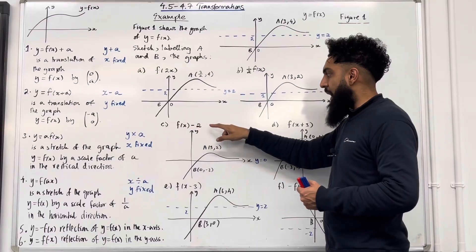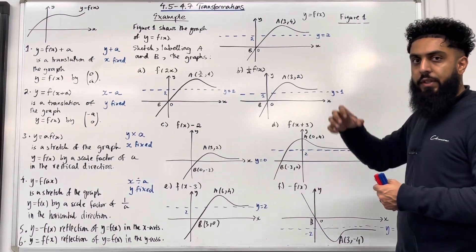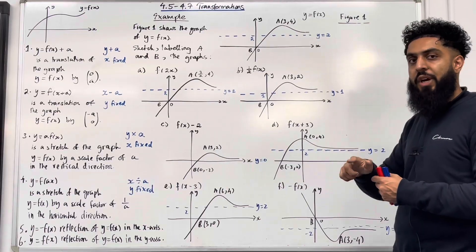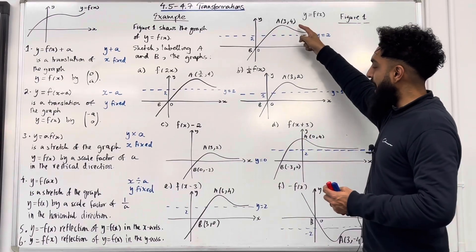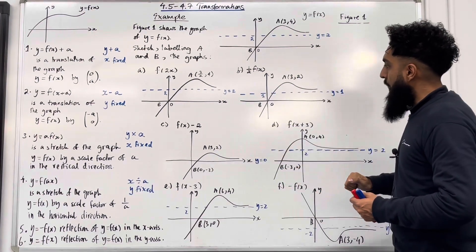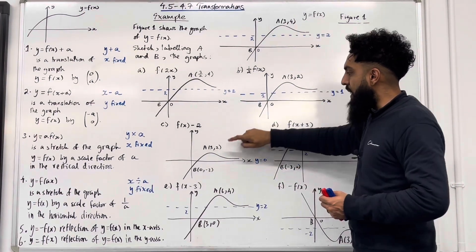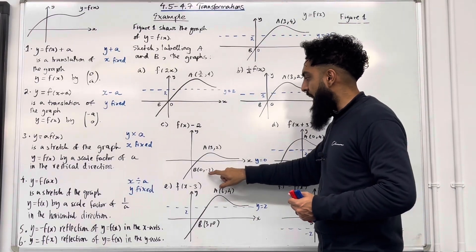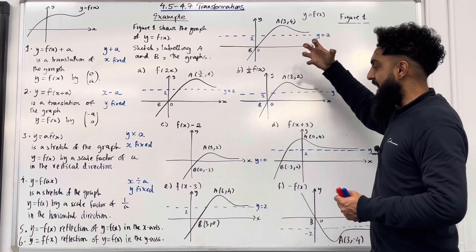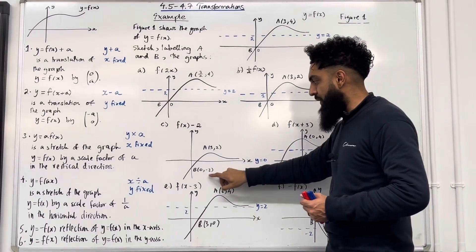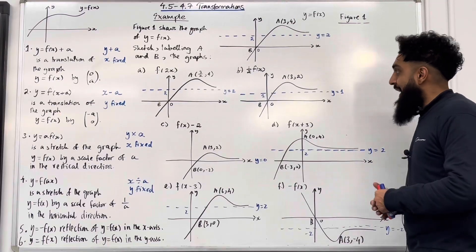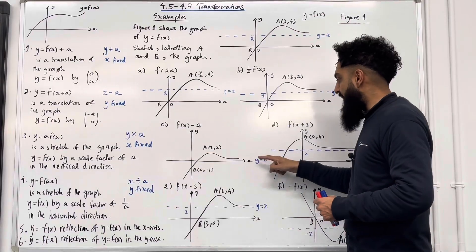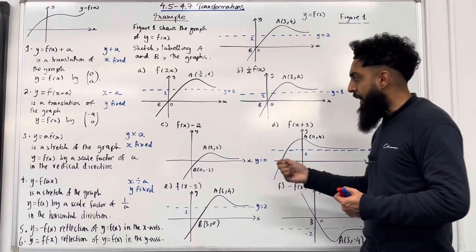Part c: f of x minus 2. You take your whole function f of x and you shift it two units downwards. In other words, you take your y-coordinate, subtract 2, keeping x fixed. So my new coordinate a will become (3, 2) because 4 take away 2 is 2 and the 3 remains fixed. My new coordinate b becomes (0, −2) because y equals 0, you take 0 minus 2 to get −2. The asymptote y equal 2 gets shifted two units downwards to y equal 0, in other words the x-axis.